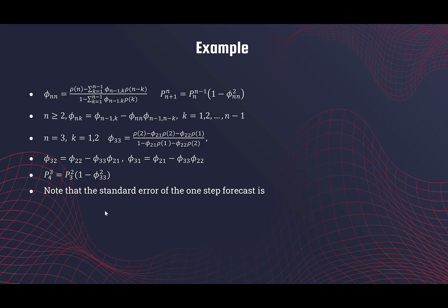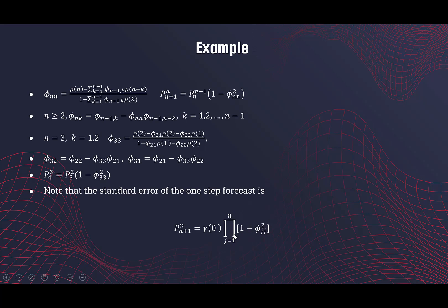You continue this way until you calculate phi_{n,n}. A lot of calculations are involved, but when n is very large this is still much better than inverting a large matrix. The standard error of the one-step forecast is the final prediction error p_{n+1,n} — the prediction error when predicting observation n+1 based on the past n observations. This equals gamma_0 times the product of (1 - phi_{1,1}^2)(1 - phi_{2,2}^2)···(1 - phi_{n,n}^2).